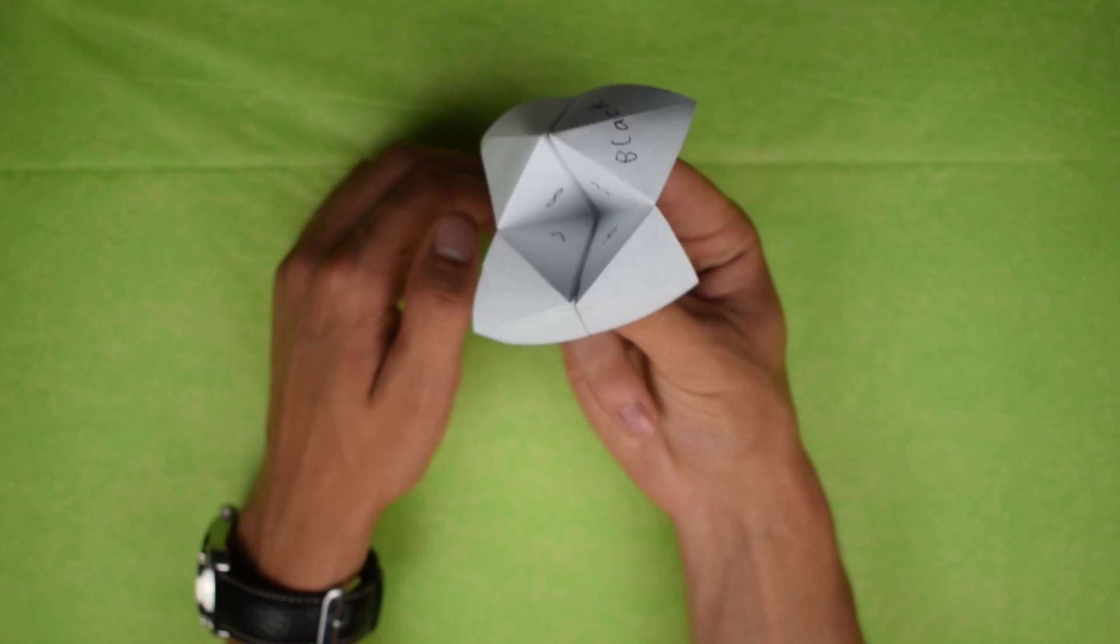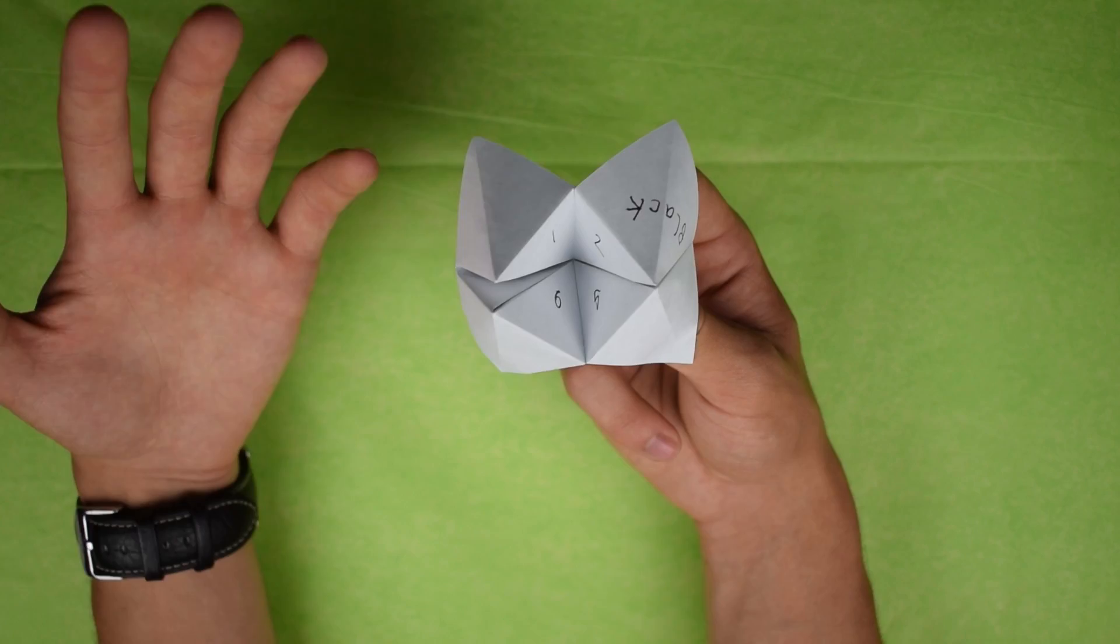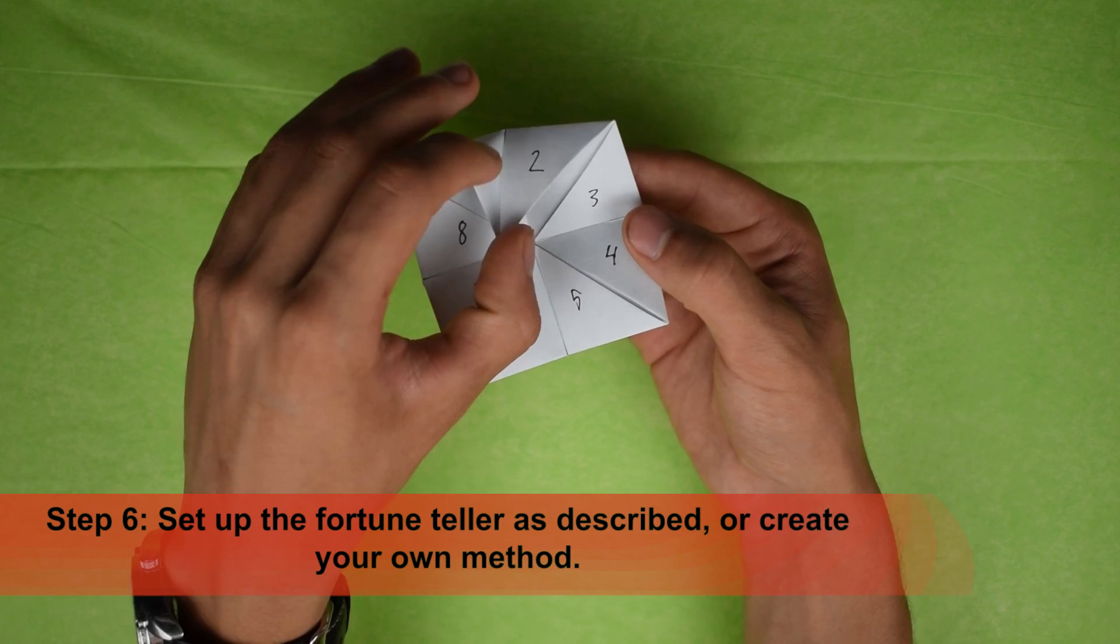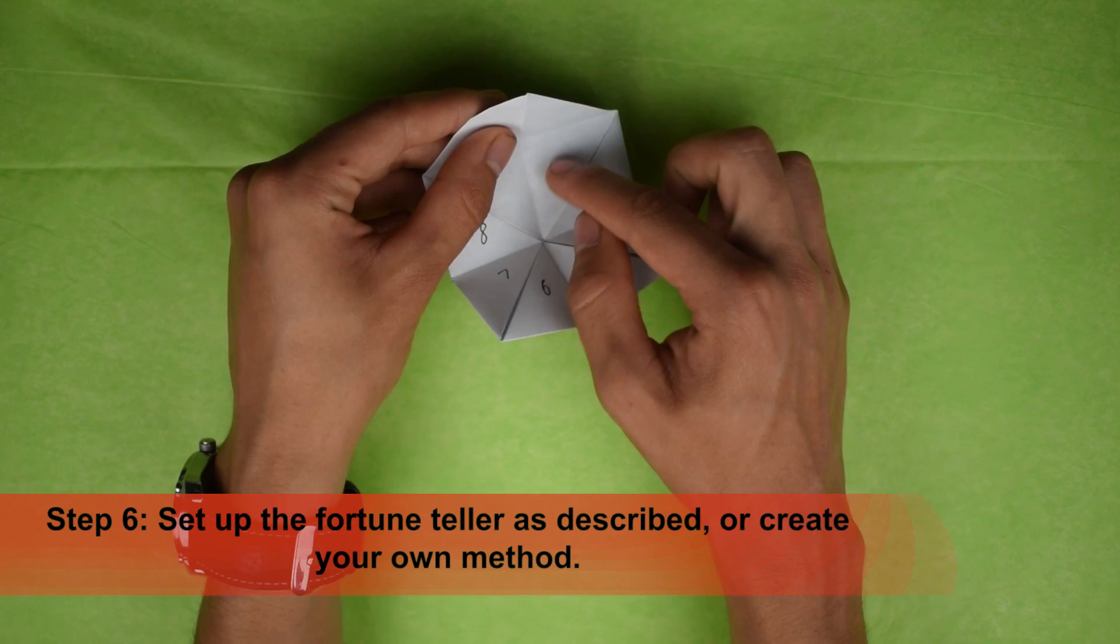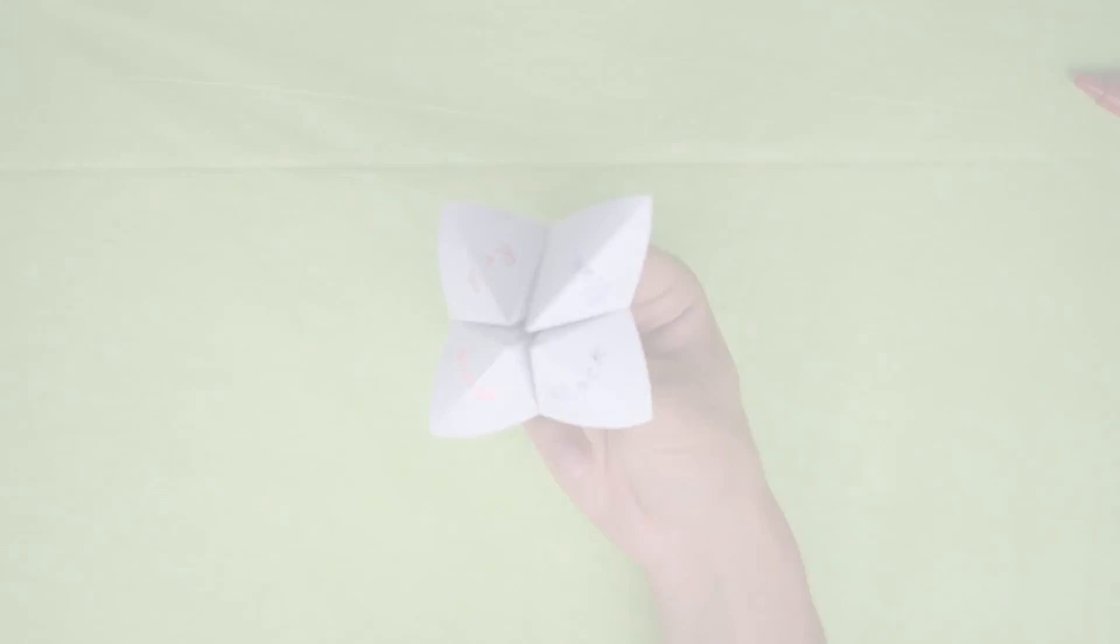Now we have numbers one, two, and six, and five. So then you'd ask them again which number. And then they'd say for example two. And at that point you would open this up. And you lift this flap right here for number two. And you would have a fortune written under the number two. So I'm going to go ahead and complete it and I'll show you exactly what it should look like using this method.